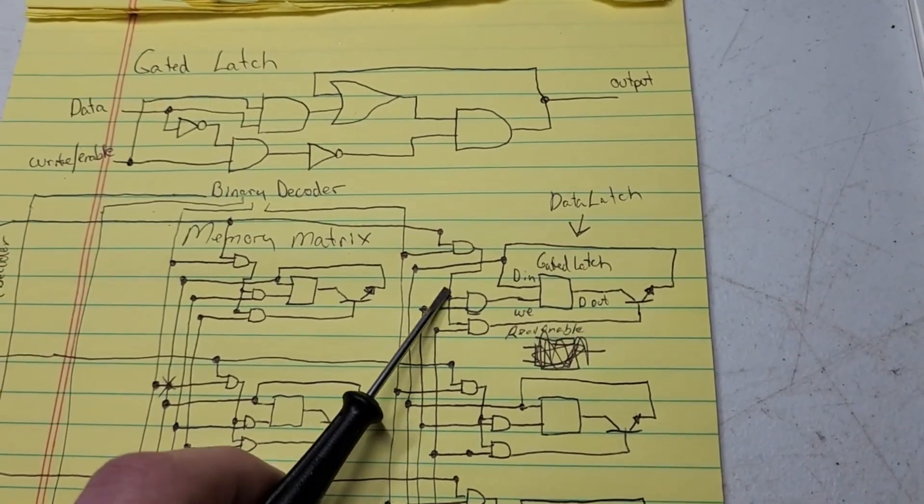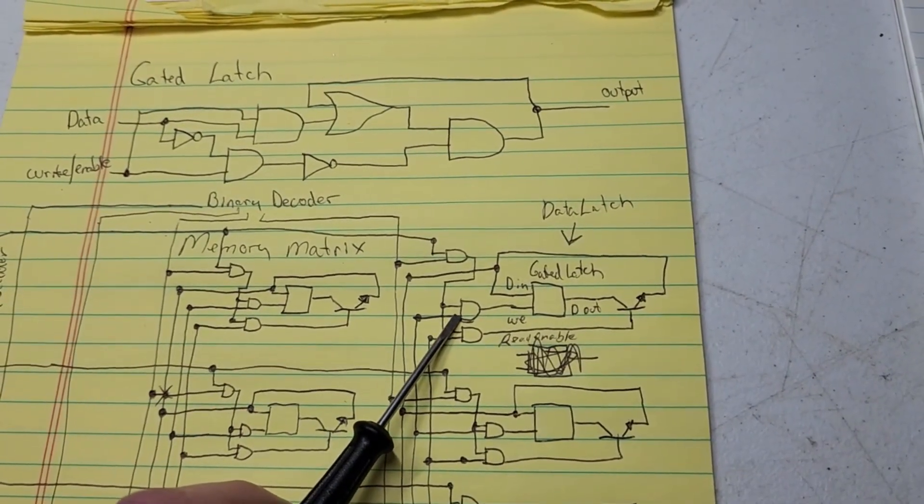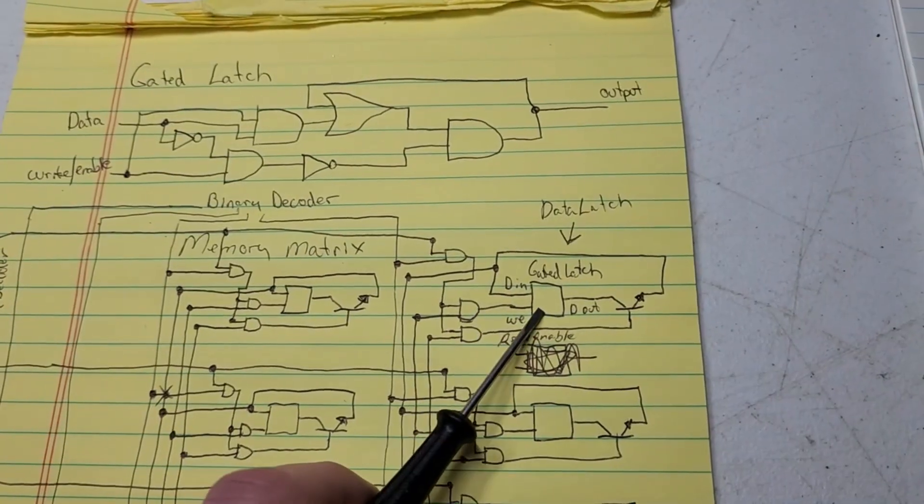And that are tied together. And then if I'm writing, then this AND gate will be active and the write will write through here.